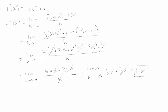When x is equal to 10, my instantaneous rate of change is 60. Alternatively, the slope of my tangent line is equal to 60 when x is equal to 10.